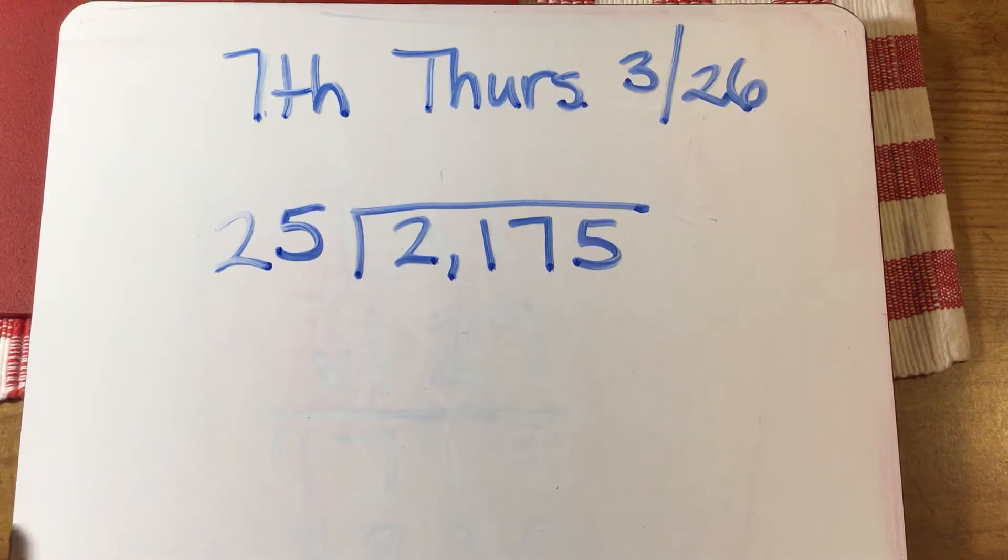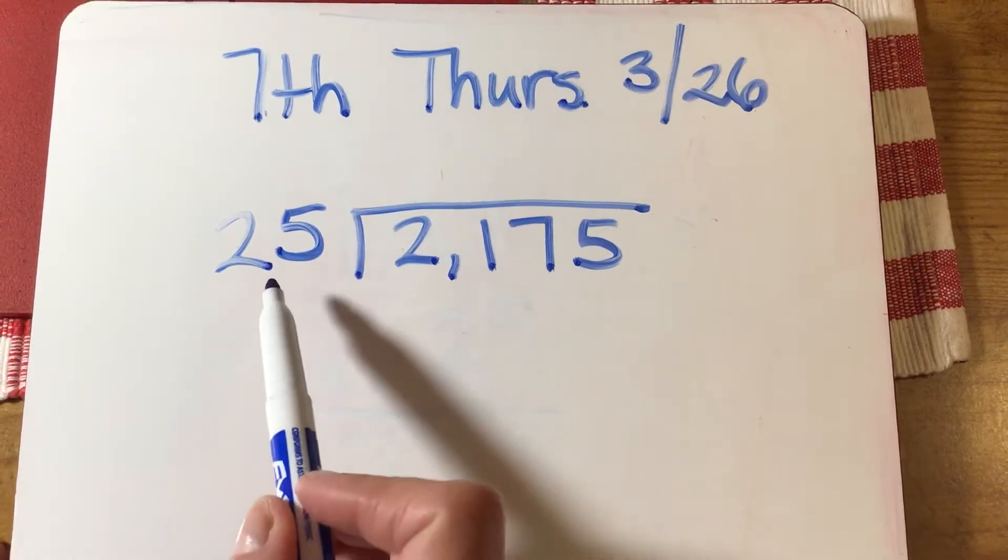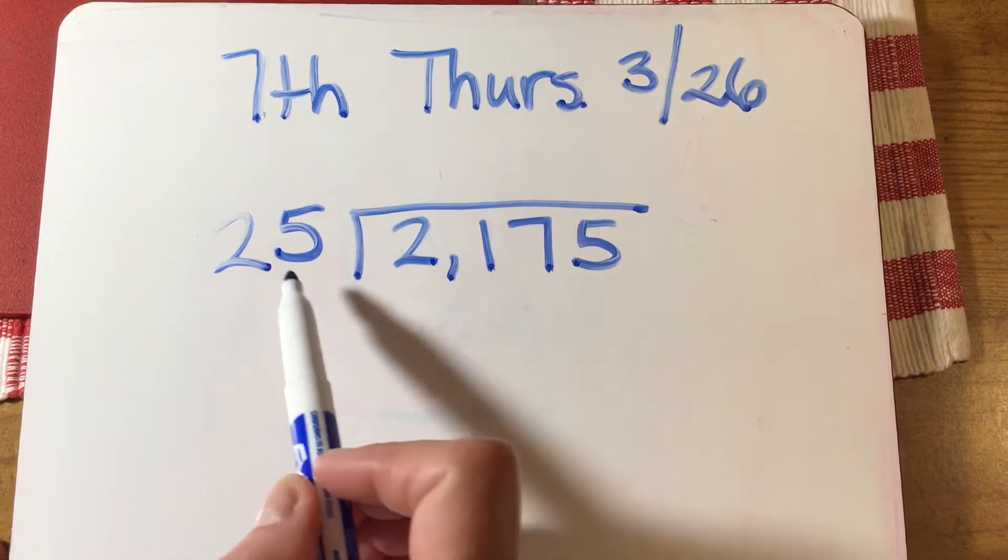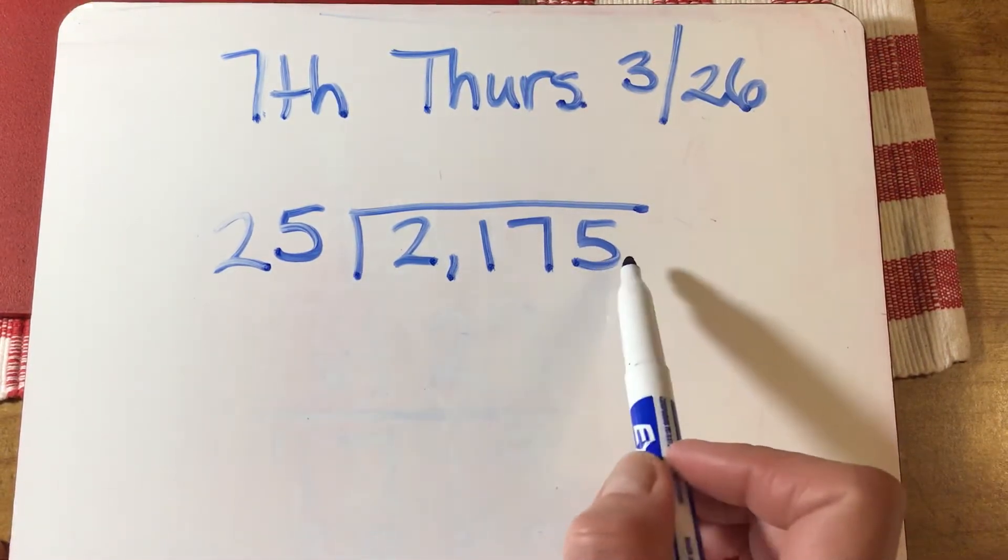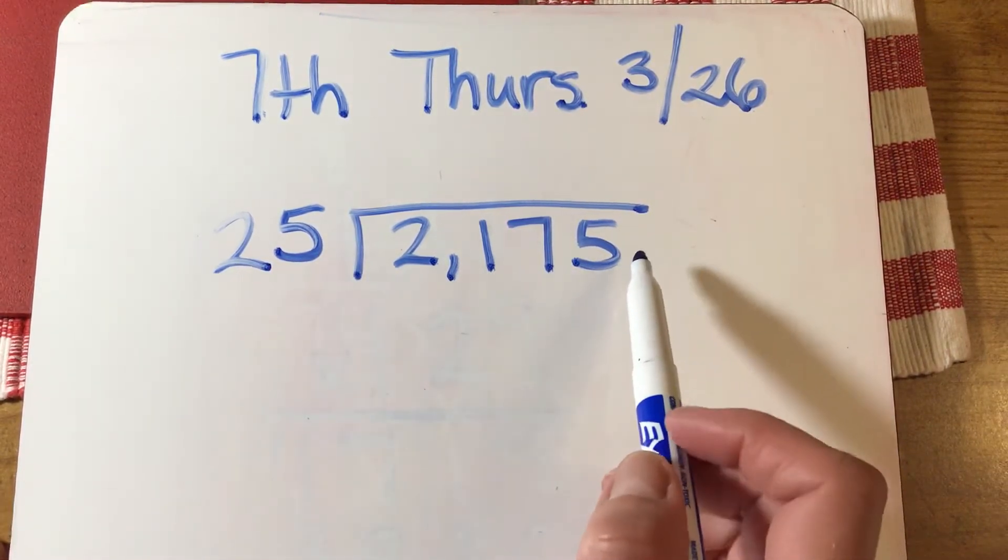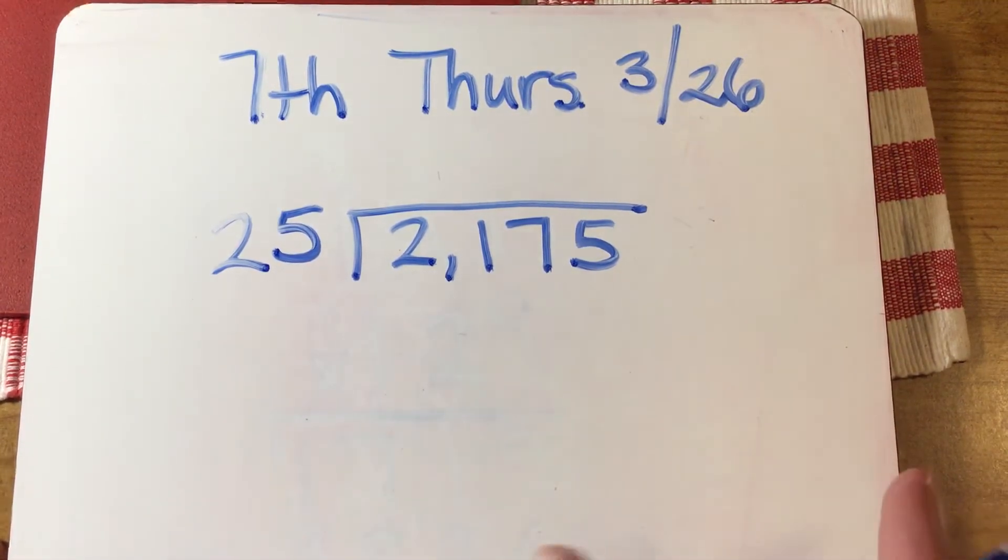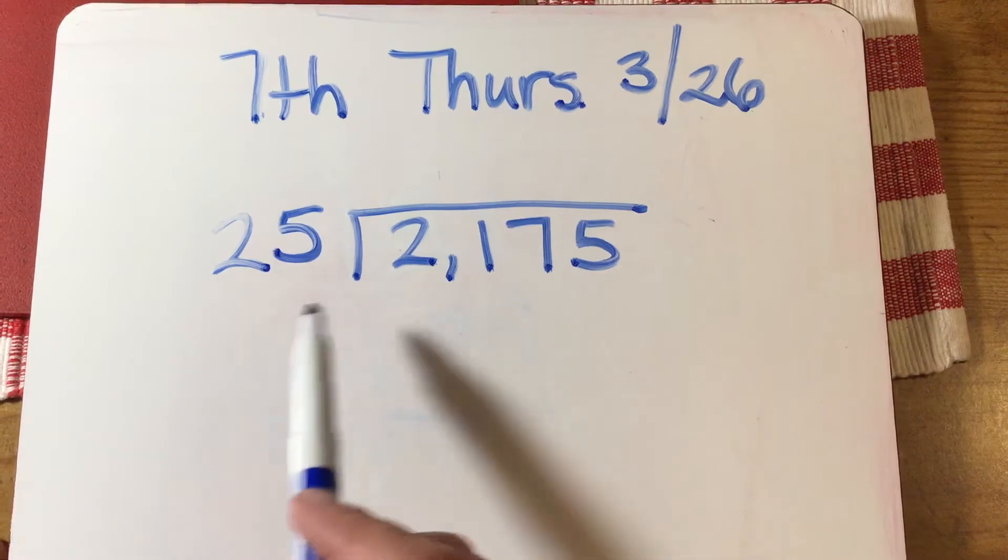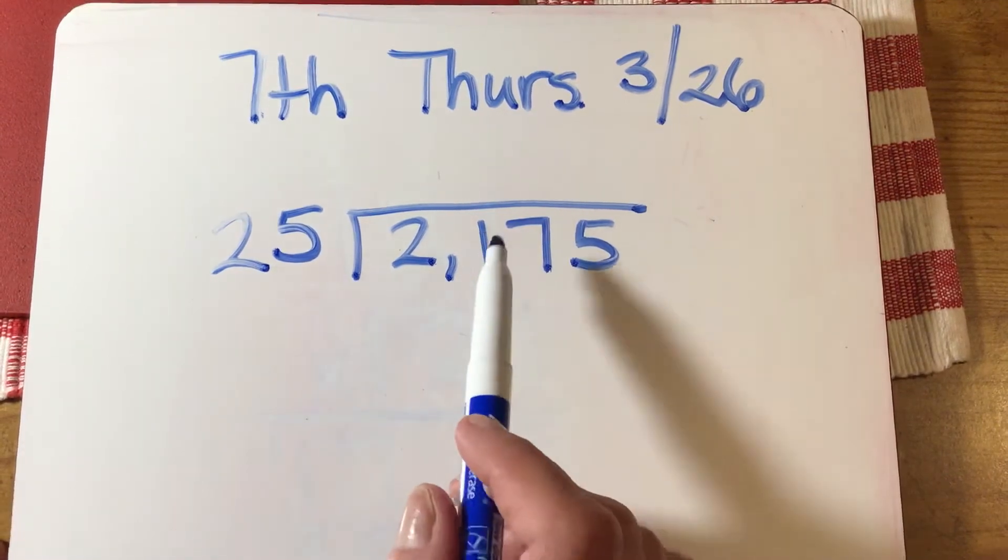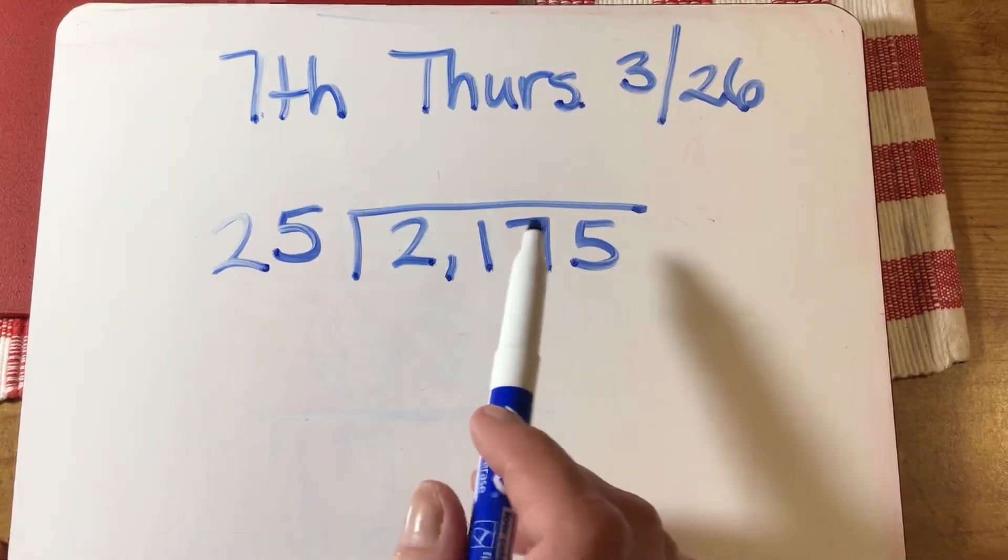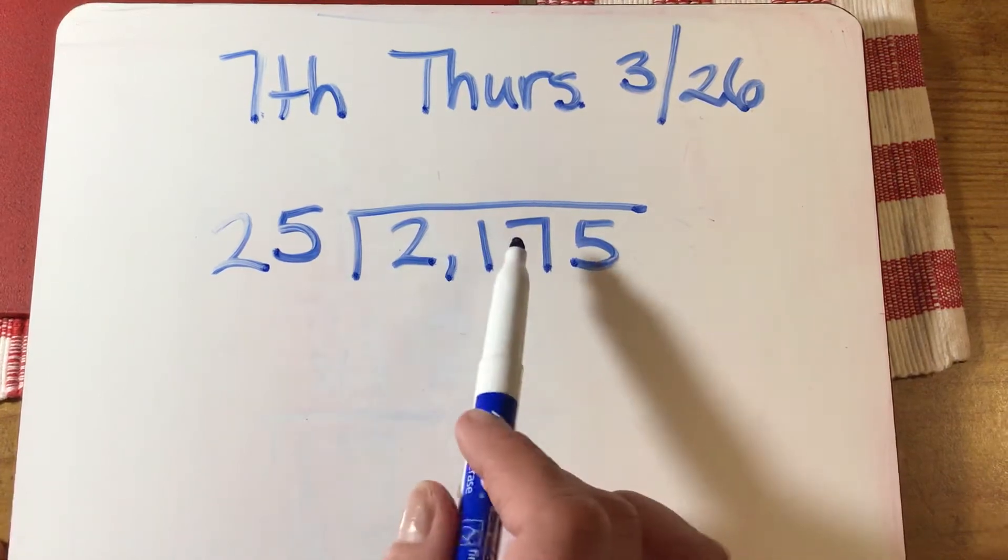To go over our steps: 25 needs to be divided evenly into 2,175. And when I say evenly, actually for this lesson, you're not going to have any remainder, so this number is going to be able to divide evenly into the number that's on the inside, which—this is the dividend and this is the divisor.